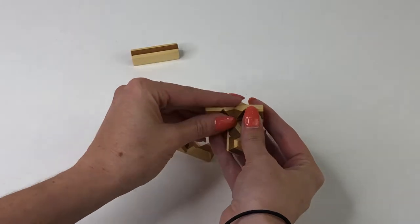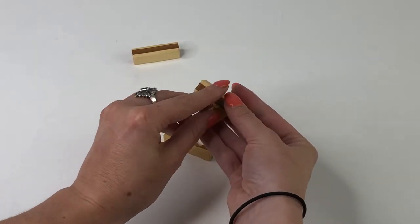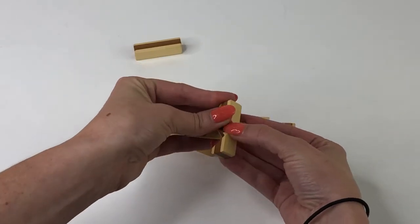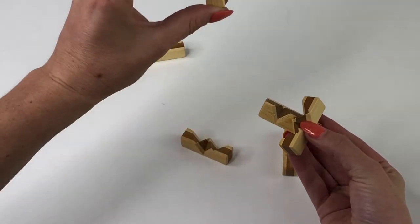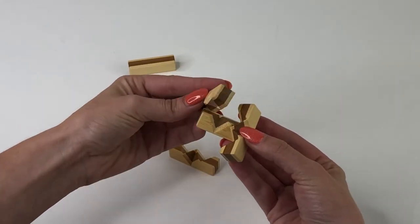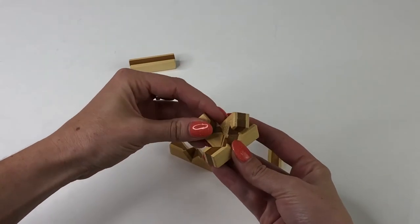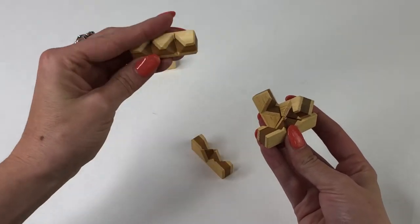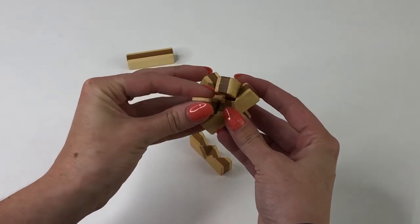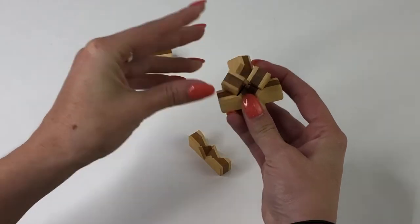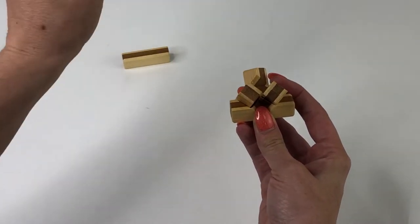Once you do that, you're going to take your two other two divot pieces and line them up on the side, two divots right in there.